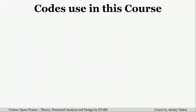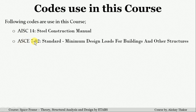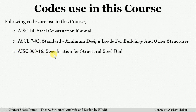In our course, for modeling, analysis, and design, we use American standards. AISC-14 is the steel construction manual — we use it for modeling the space frame in ETABS, considering the steel section database as per AISC-14, which is the previous revision of the latest standard AISC-15. We also use ASCE-702, the older revision of ASCE-716, which is the standard for minimum design loads for buildings and other structures, for consideration of wind and earthquake forces. Additionally, we use AISC-360-16, the specification for structural steel buildings and the latest AISC standard for steel design. In the course, we use the direct analysis method for design.